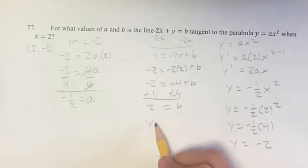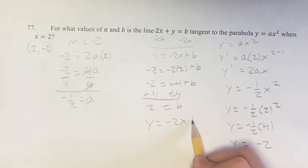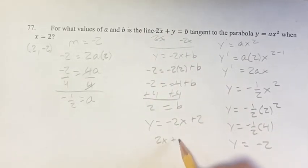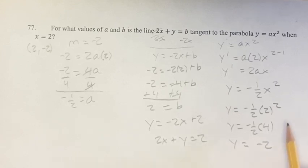And our equation for the line is y equals negative 2x plus 2, or in this form, 2x plus y equals 2. So doing this, we know that a is negative 1 half and b is 2.